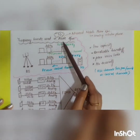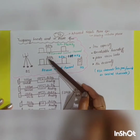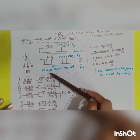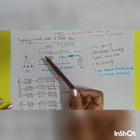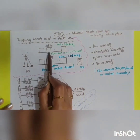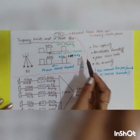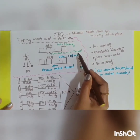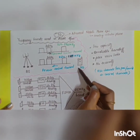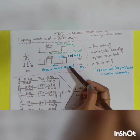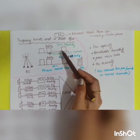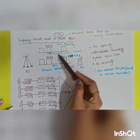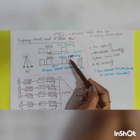The figure shows the frequency bands used in the AMPS system. There are two channels: the forward control channel and the reverse control channel. The forward control channel refers to transmission from the base station to the mobile station, while the reverse control channel is transmission from the mobile station to the base station.